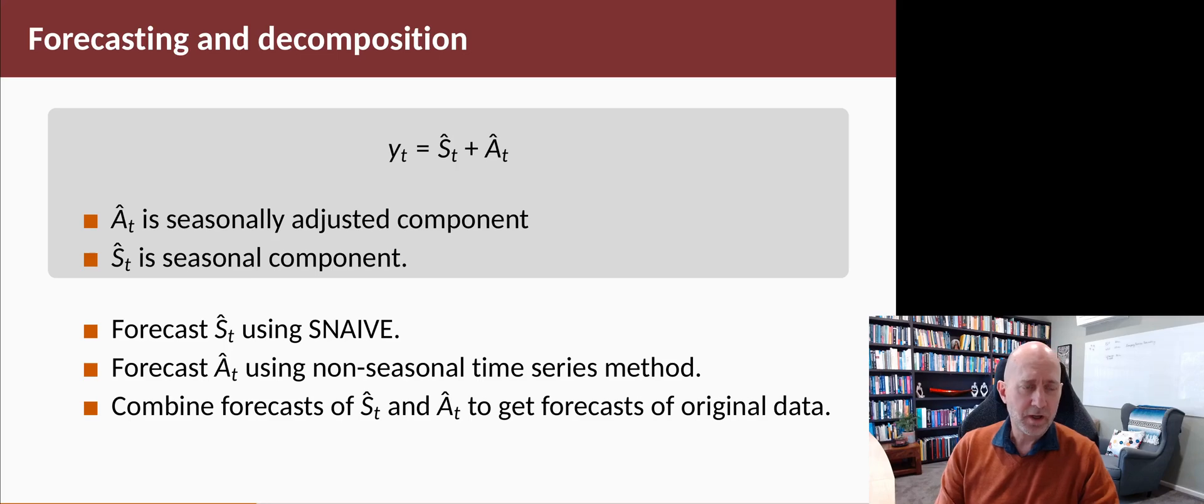So far we've seen a few methods: we've got the mean method, the naive method, and the drift method. In later chapters we'll have a whole lot of other options for forecasting A. We add the two forecasts together and we get the forecast for Y.